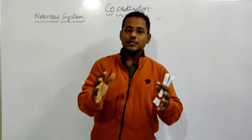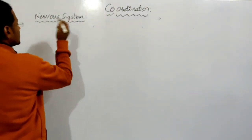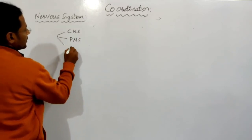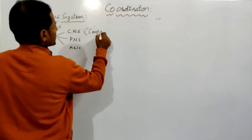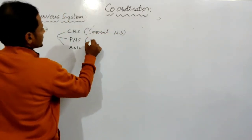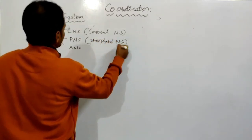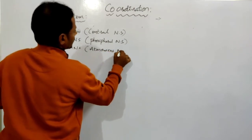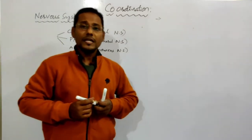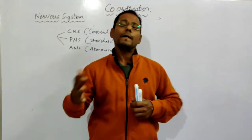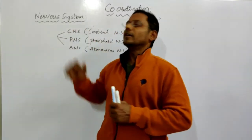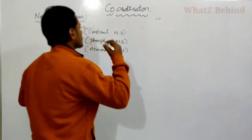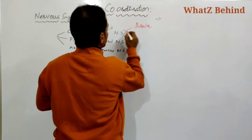Now let us see the different parts of the nervous system. For easy understanding, the nervous system is divided into three parts: CNS (central nervous system), PNS (peripheral nervous system), and ANS (autonomous nervous system). The CNS contains two major parts: the brain and the spinal cord.